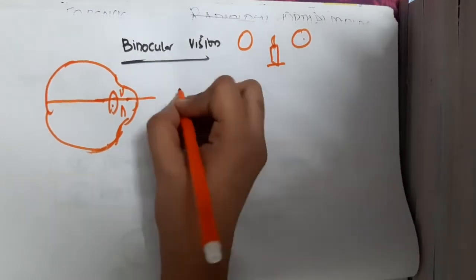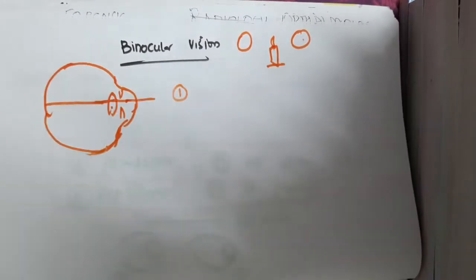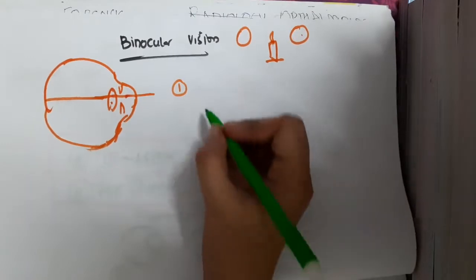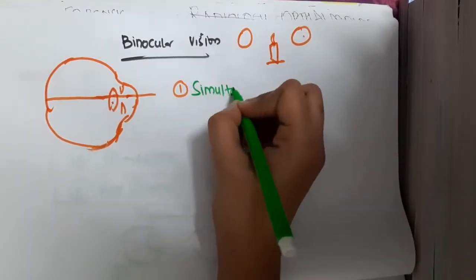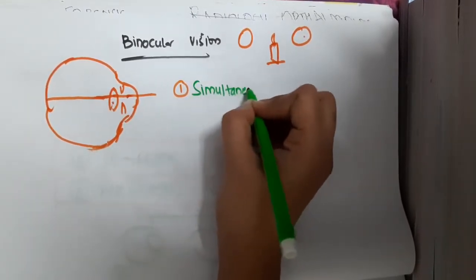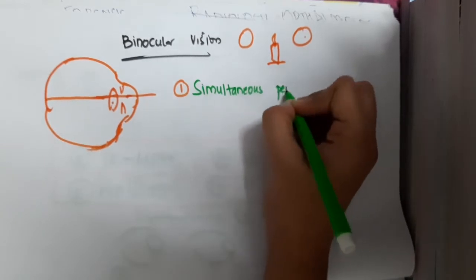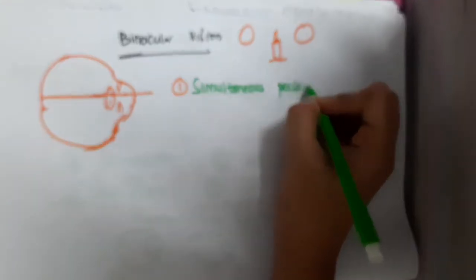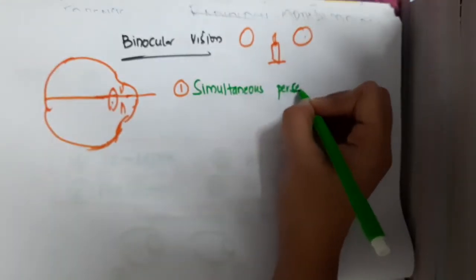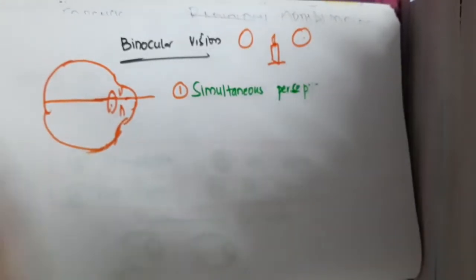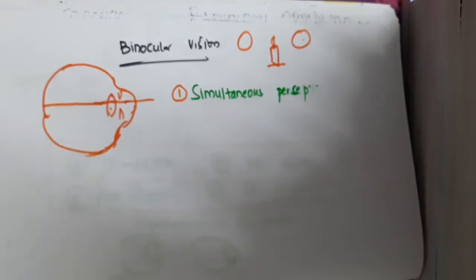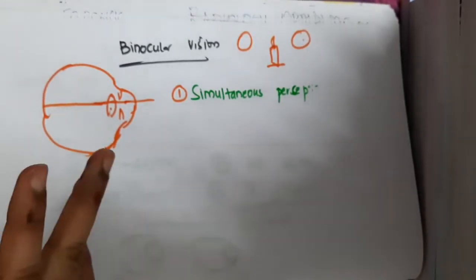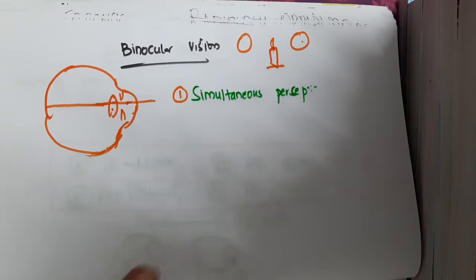So what are the main grades of binocular vision? We have three grades. The first important one is simultaneous perception — that means two objects should be seen at the same time. Only then this works.